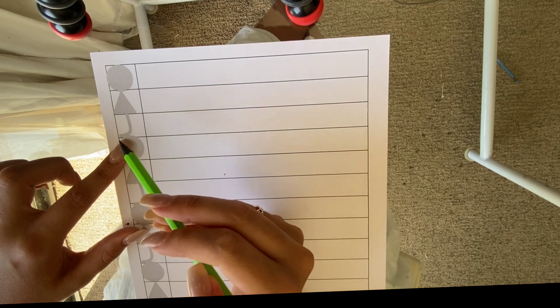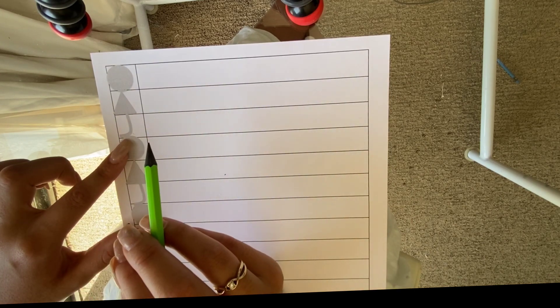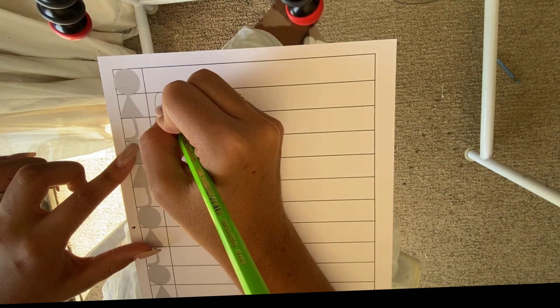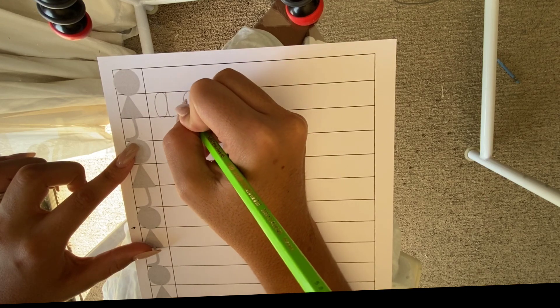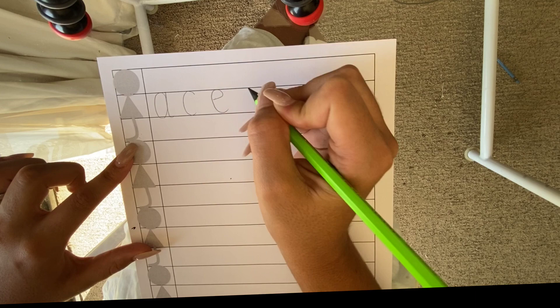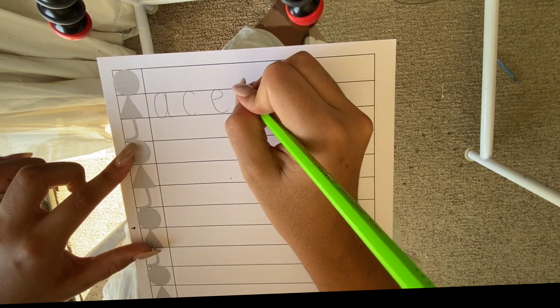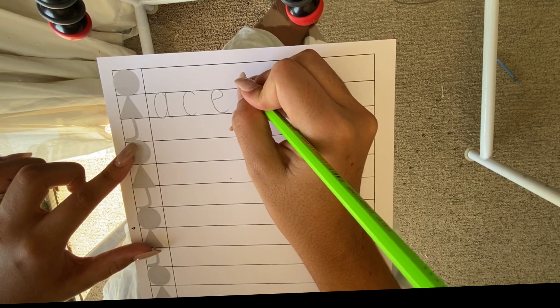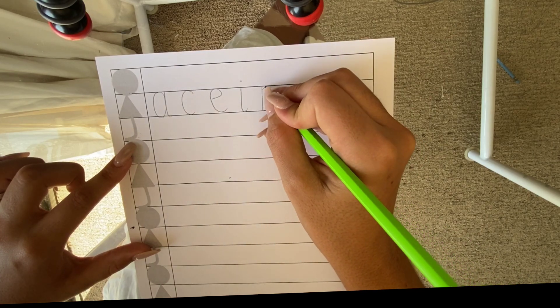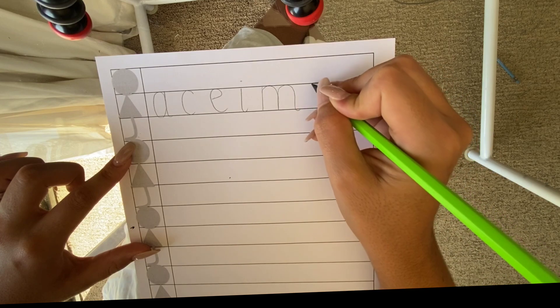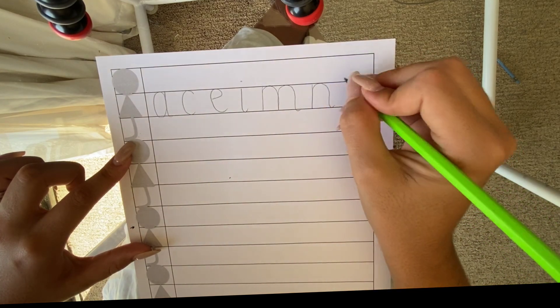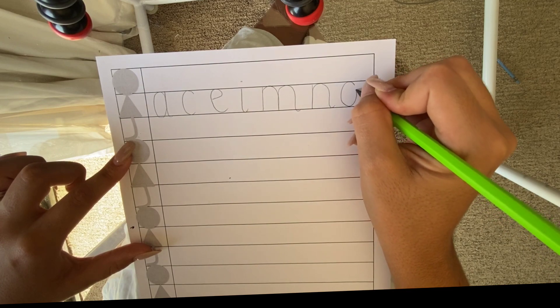So letters that like to sit only in Oscar the cat's tummy are letters A for Annie Apple, C for Clever Cat, E for Eddy Elephant, I for Impy Ink, M for Munchy Mouse, N for Naughty Nick, O for Oscar Orange.